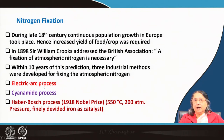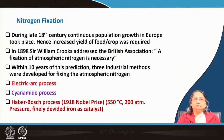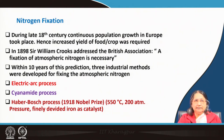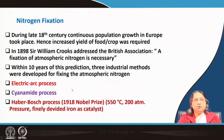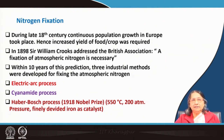The three methods are: the electric arc process, the cyanamide process, and the Haber-Bosch process. The Haber-Bosch process, which I have mentioned in earlier lectures, is a very good example of nitrogen fixation and is still in use today to make fertilizers. I will show how nitrogen can be fixed using these methods.